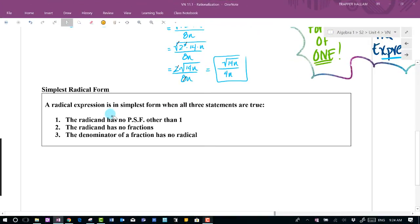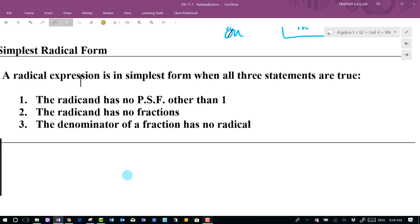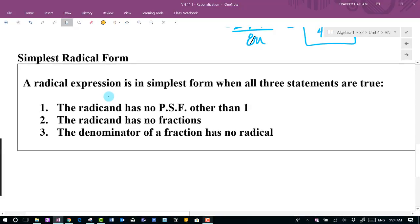Okay, so then the simplest form, now that we have all our rules for a radical or any expression with a radical in it, would be true if all of these three statements are true. Meaning first, that the radicand, again the value underneath the radical, has no perfect squared terms, we'll say other than one, meaning that it's basically a prime number.